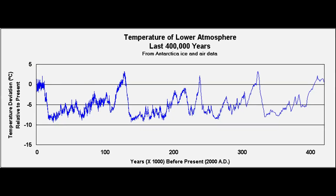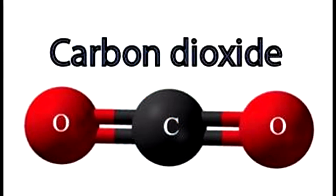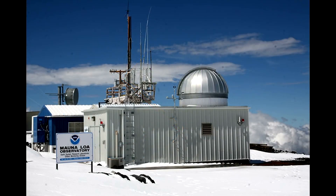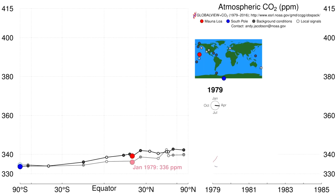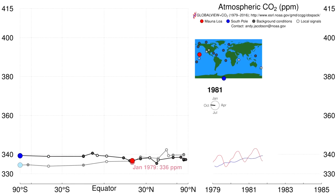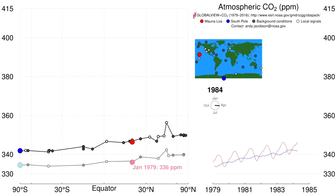Getting back to the greenhouse gases, and especially carbon dioxide: we saw the figure of 0.03%. When dealing with small numbers like this, rather than writing it as a percentage it's more often written as parts per million. So in the case of carbon dioxide, 0.03% would be written as 300 parts per million — in other words, there are 300 carbon dioxide molecules in every million parts of air. Since the late 1970s, the amount of carbon dioxide in the air has been measured, in particular at the Mauna Loa Observatory in Hawaii and at the South Pole. Taking a look at the levels of carbon dioxide in the atmosphere over the past 30 to 40 years: in January 1979, the level of CO2 was measured at 336 parts per million.